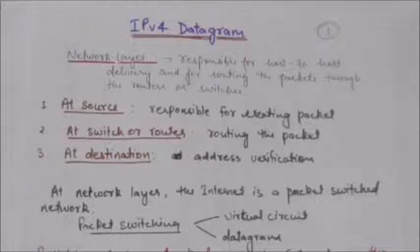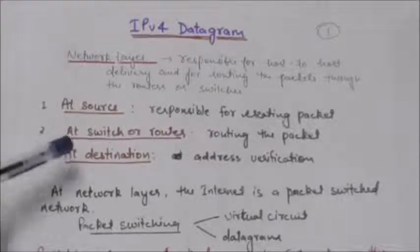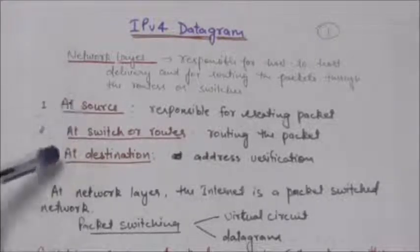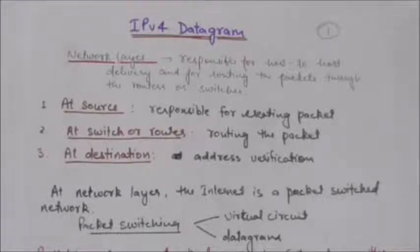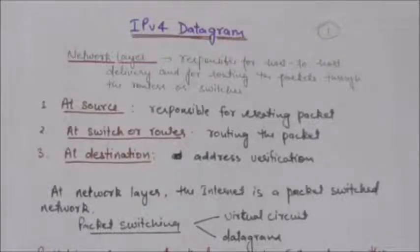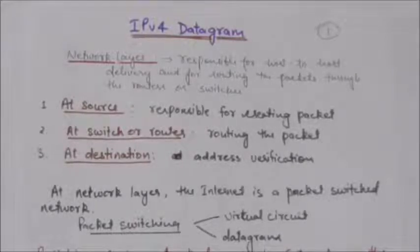At the destination, the network layer is responsible for address verification. The network layer makes sure that the destination address of the packet is the same as the address of the host.